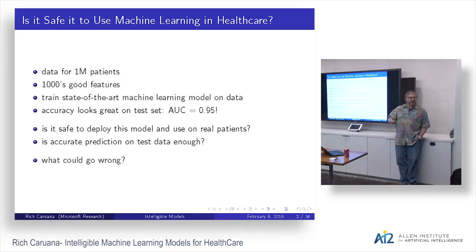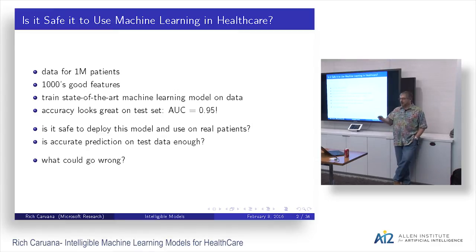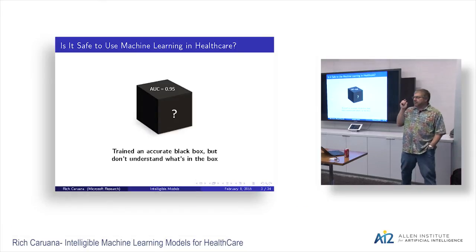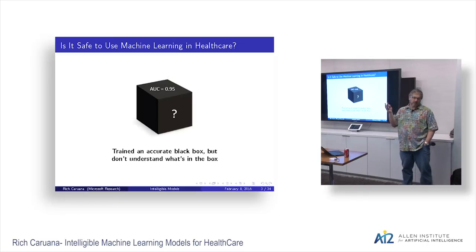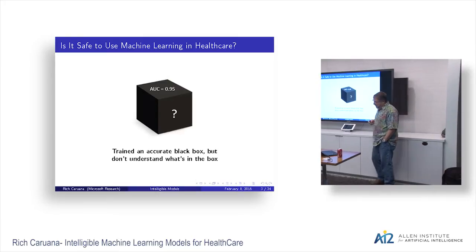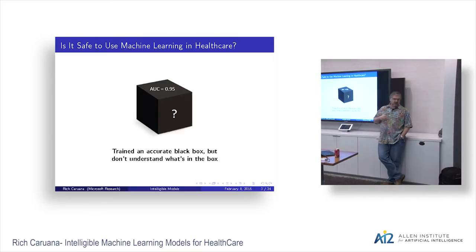I'm going to give you some sort of horror story of things that can go wrong — and it's going to be a real horror story from my experience. And then, using that, we're going to try to develop a method to get around those problems. So this is what you've got: a black box with an ROC of 0.95. Maybe it's a deep neural net or an ensemble of boosted trees. You might think you've done some feature sensitivity analysis and have an idea of what's in the box, but I'll show you how much you don't know about what's in the box.